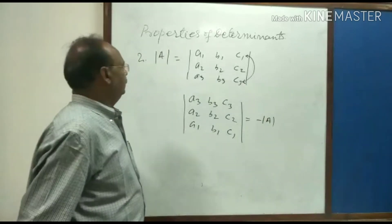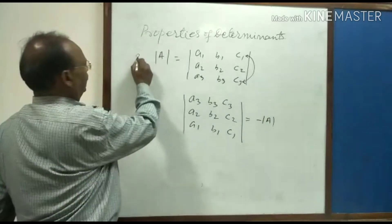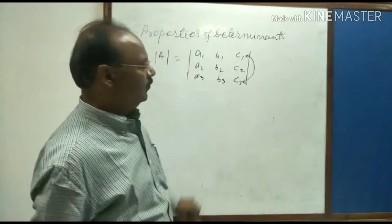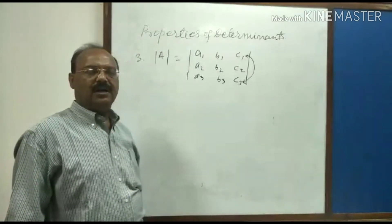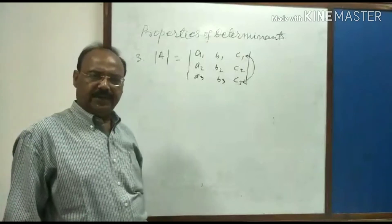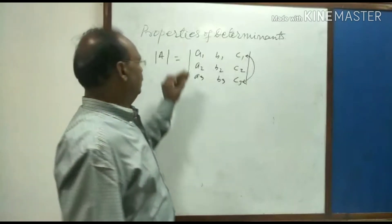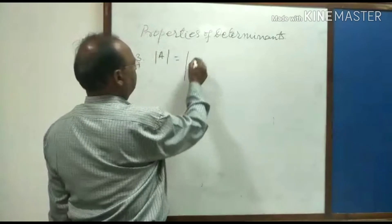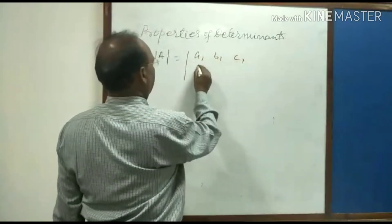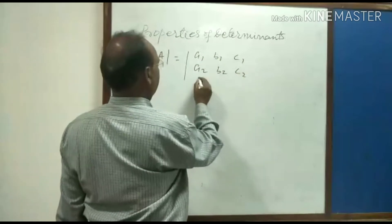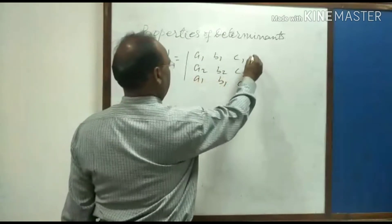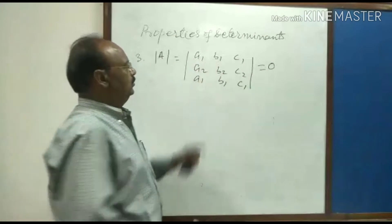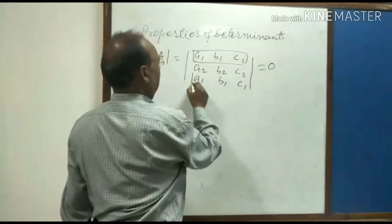Next, property three: if elements of any two rows are identical, then the value of the determinant will be zero. For example, a determinant with rows a1 b1 c1, a2 b2 c2, a1 b1 c1 — the value will be zero because these two rows are identical.